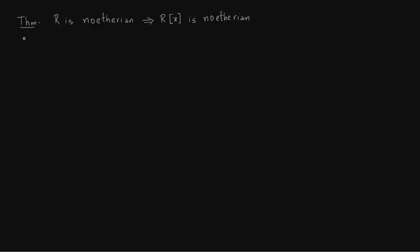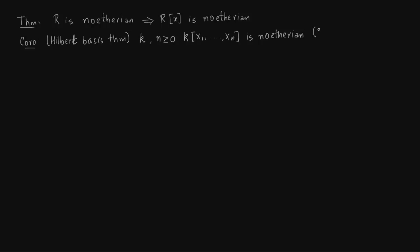The corollary of the above theorem is the Hilbert Basis Theorem, which we will prove on the next slide. So what is the Hilbert Basis Theorem? For any field k — not necessarily algebraically closed — and any positive integer n, k[x₁, x₂, ..., xₙ] is Noetherian. The proof follows by induction: you just keep adding variables, since R[x] Noetherian implies R[x,y] Noetherian.